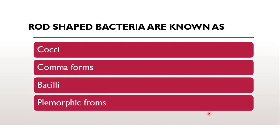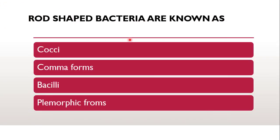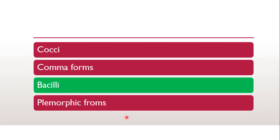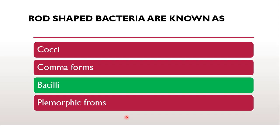Next question: the rod-shaped bacteria are known as — whether they are known as cocci, comma forms, bacilli, or pleomorphic forms. According to the classification of bacteria based on shape, rod-shaped bacteria are known as bacilli. As you can see, rods are called bacilli, spheres are called cocci, and these are the spiral forms. So the correct answer is bacilli.